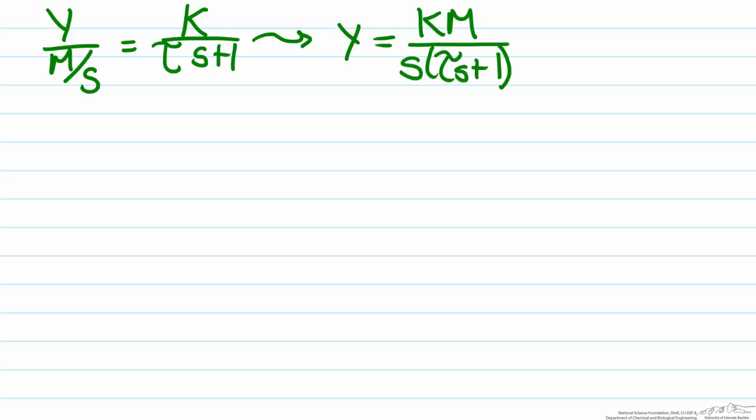We cannot take the inverse Laplace transform of this function quite easily so we have to use either partial fractions or the heaviside method. Here we will use partial fractions and this will just become a over s plus b over tau s plus one.